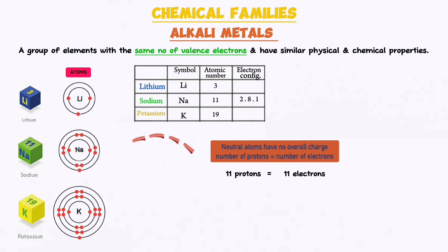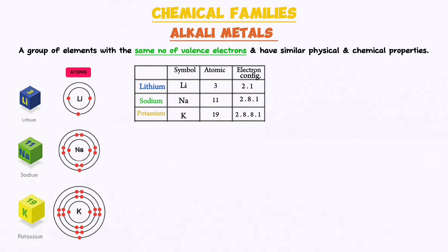I won't go into detail on electron arrangement in energy levels here, as that's covered in a previous video under valences. What you need to note is that elements with the same number of valence electrons will have similar chemical properties, because it's the valence electrons that determine how a particular element reacts with other components.